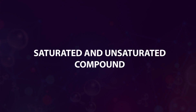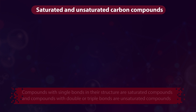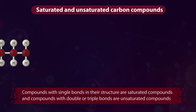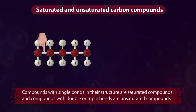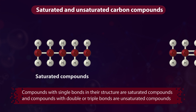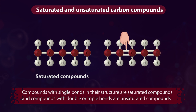Saturated and Unsaturated Carbon Compounds. We already learned that compounds with single bonds in their structure are saturated compounds, and compounds with double or triple bonds are unsaturated compounds.